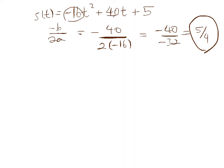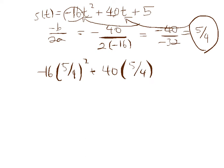To get the y-coordinate of the vertex, we're just going to take this 5 fourths here and plug it in for the t. So we have negative 16 times 5 fourths squared plus 40 times 5 fourths. So 5 fourths squared, that's going to be 25 over 16.